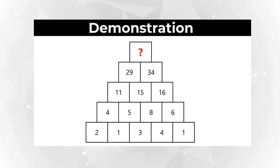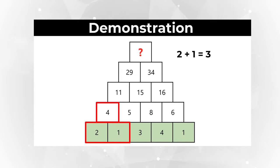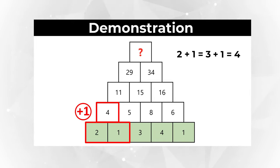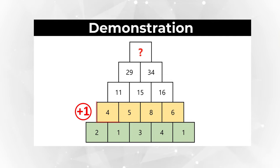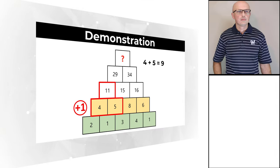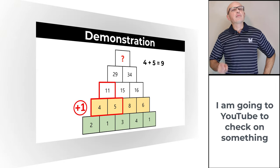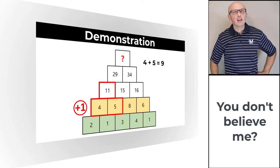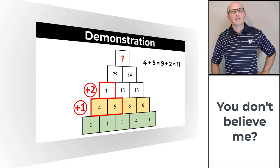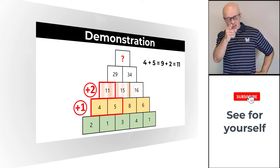Let me demonstrate. If we look at the numbers in the bottom left corner of the pyramid, you see numbers 2 and 1. The sum of 2 and 1 is 3, but then we add the value of the increment, which is 1, and the calculated value is 4. The next set of numbers is 4 and 5. 4 plus 5 is 9, and then we add the increment which increased by 1, so instead of plus 1, the increment is plus 2.